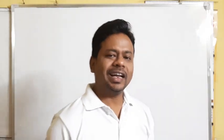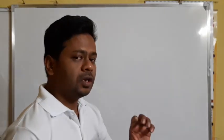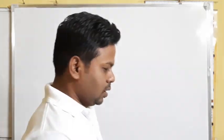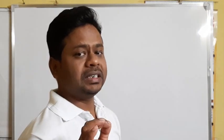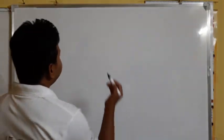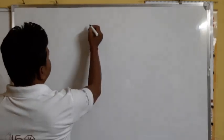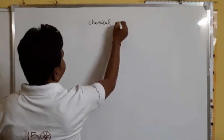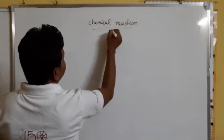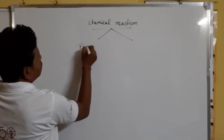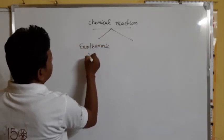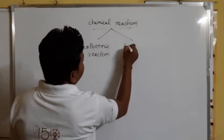Hello students, I'm back with a big smile on my face. We have already completed the five types of chemical reaction in this chapter. The rest of this chapter includes some other types of chemical reactions. According to the amount of heat energy released, we can divide reactions into two types: exothermic reaction and endothermic reaction.